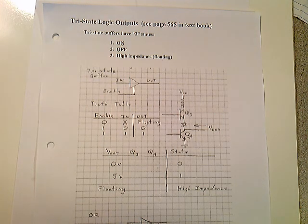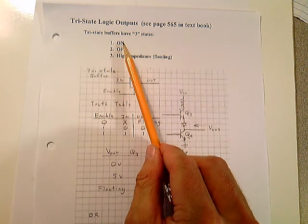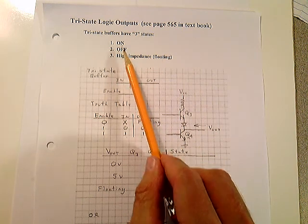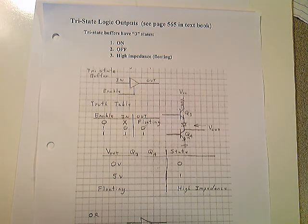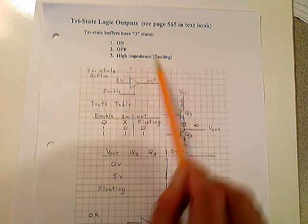Tri-State implies three states. You can have a state that's on, you can have a state that's off on the output. In other words, you can have a high or you can have a low on the output. That's always been the case. But we're going to add a third state. We're going to add a high impedance or a floating state.